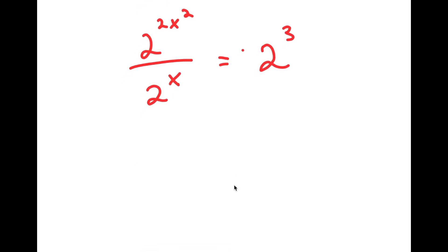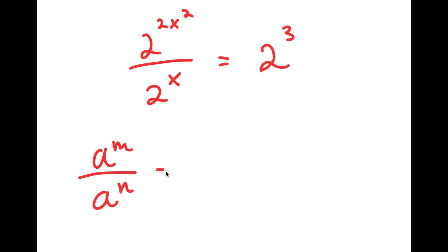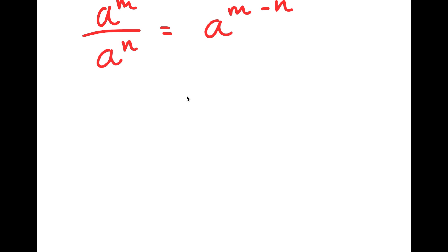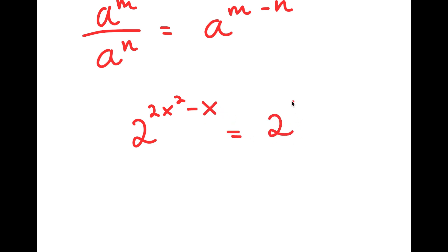Now, if I have something in the form a to the power of m over a to the power of n, this is equal to a to the power of m minus n. So 2 to the power of 2x squared over 2 to the power of x can be rewritten as 2 to the power of 2x squared minus x, which is equal to 2 to the power of 3.